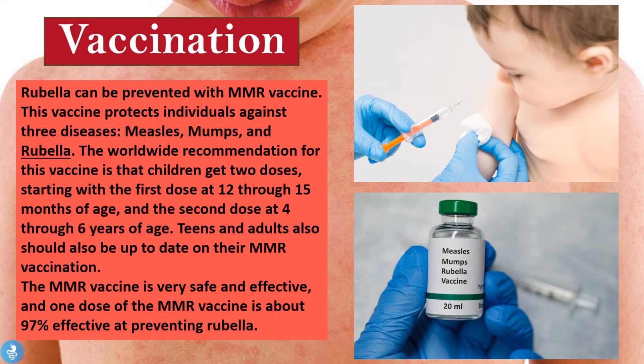Rubella can be prevented with the MMR vaccine, which protects individuals against three diseases: mumps, measles, and rubella. The worldwide recommendation is that children receive two doses — the first at 12 to 15 months of age, and the second at four to six years of age. Teens and adults should also be up to date with the MMR vaccine. One dose is about 97% effective at preventing the onset of rubella.